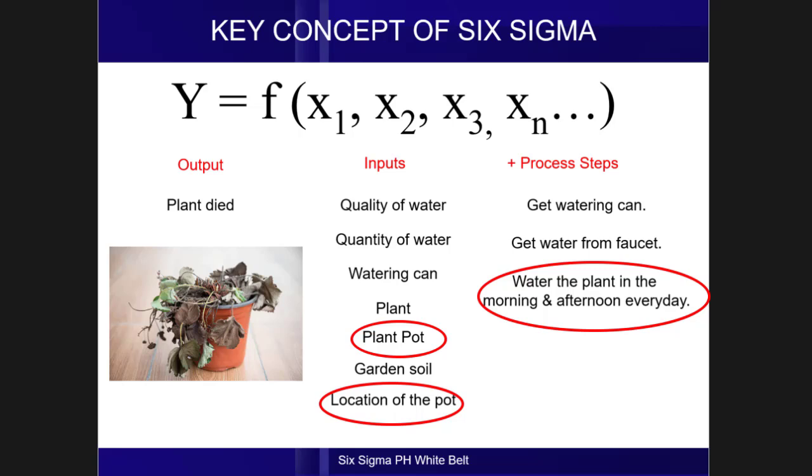The third root cause is a process step, which is water the plant in the morning and afternoon every day. We found out that the specific plant that we have only needs watering once every four days.